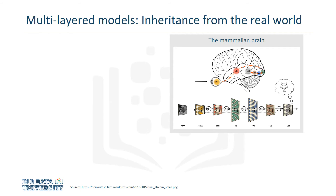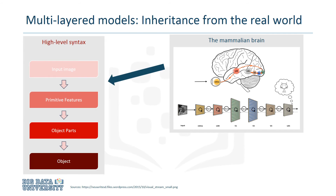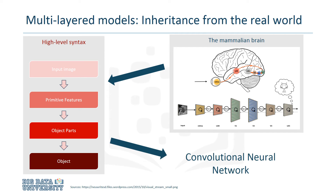We can use this as inspiration to develop a high-level approach to the object recognition problem. We start with an image. We extract a few primitive features, we combine the features together to form the parts of the object, and then we combine the parts together to form the object itself. The convolutional neural network was developed from this sequence of steps.